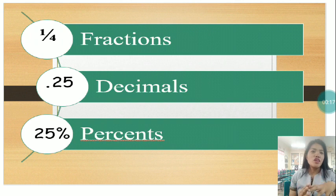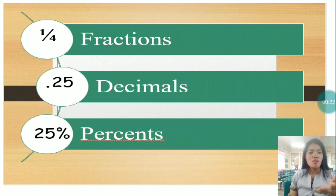We have here the presentation of fractions, decimals, and percents. You have for fractions, as we all know, one-fourth. Decimals, you have 0.25 or 25 hundredths, and percents, you have 25%.